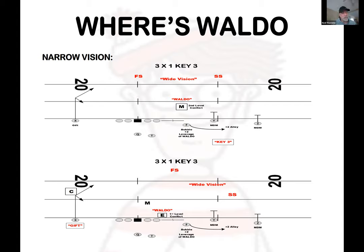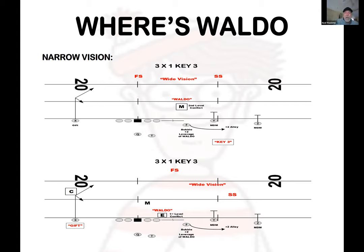So the quarterback knows: zone read — wide vision split safety, Waldo is the Mike, do I have leverage? If yes, throw the bubble. If no leverage but five-on-five in the box, run the ball. If he wide visions post safety or they're rolling to three-strong or three-buzz, he knows it's a first-level conflict read on the end — pull and run off the end — but his first thought should be: do I have gift on the backside? That's where his numbers are.